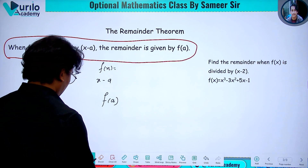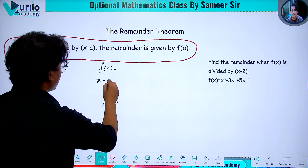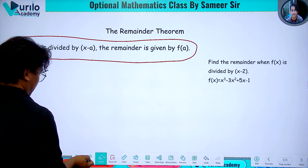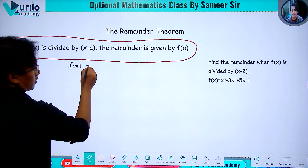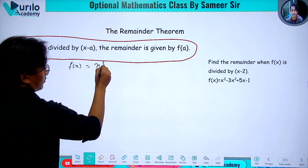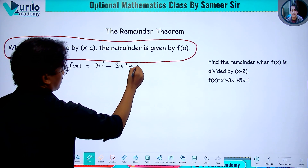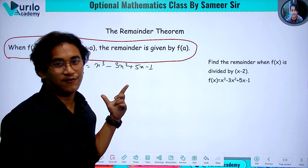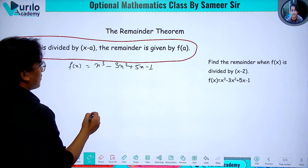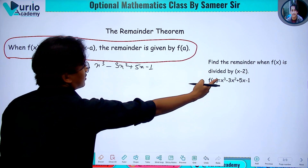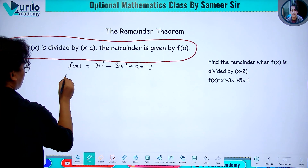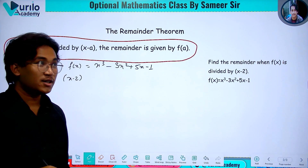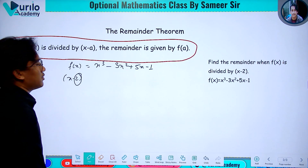Example. Now f of x equals x cubed minus 3x squared plus 5x minus 1. This function is divided by (x minus 2). So x minus 2 is the divisor, and the remainder is f of 2.